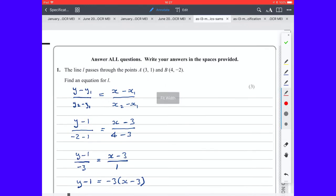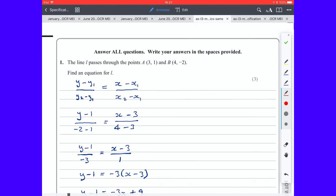Right. Let's solve the same problem this time by first finding the gradient between A and B. And the gradient between two points x₁y₁ and x₂y₂ is given by m equals (y₂ - y₁)/(x₂ - x₁).